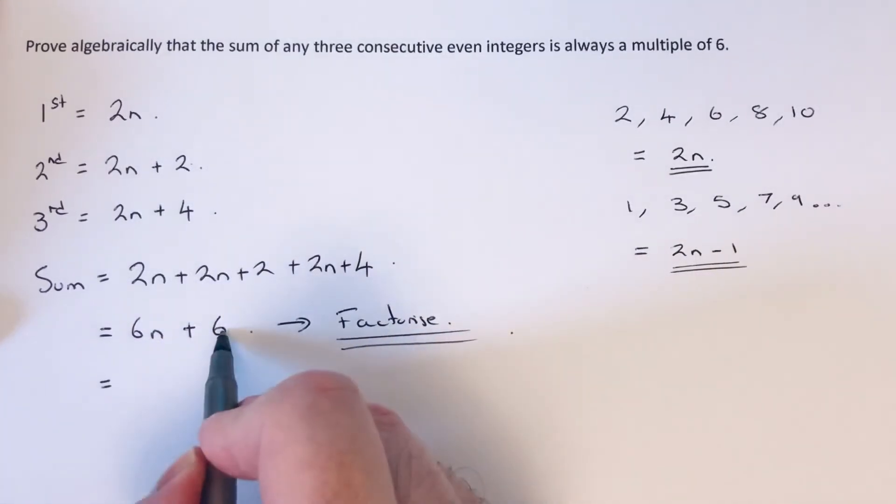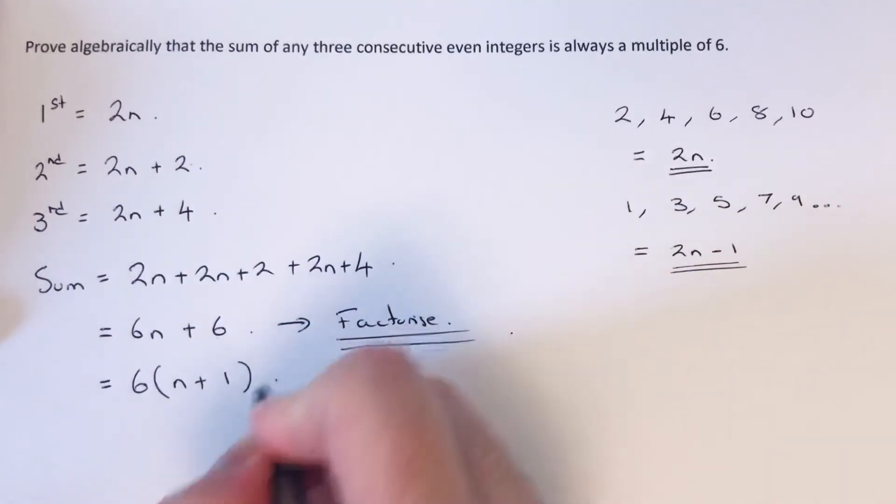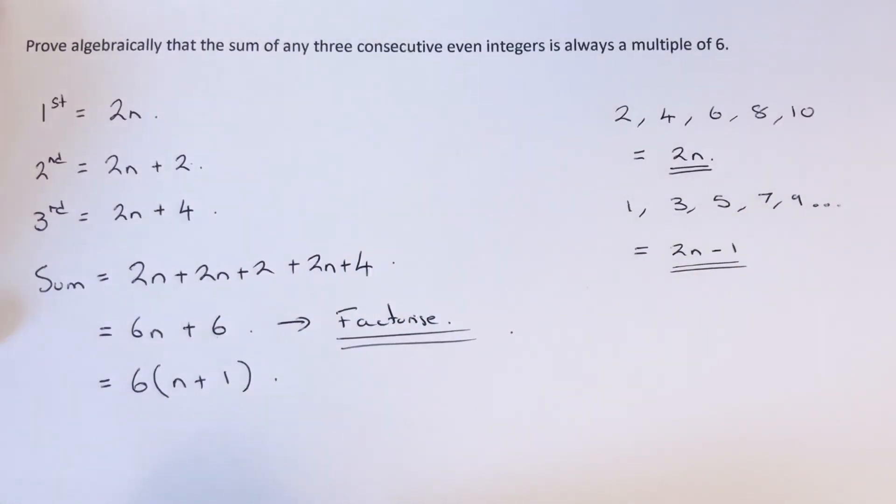We can see that both terms are a multiple of six, so we put the six on the outside and inside the bracket we have n plus one. This proves that the sum of any three consecutive even integers is always a multiple of six.